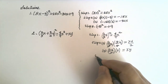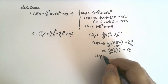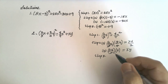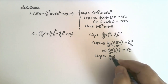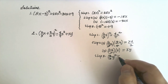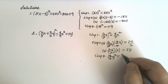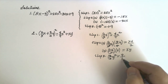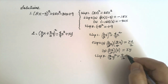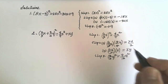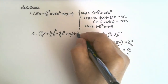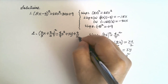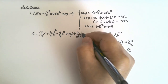Step number three: square the second term — multiply 3/4 y by itself. 3 times 3 is 9, 4 times 4 is 16, and y times y is y squared. So this gives plus 9/16 y squared.